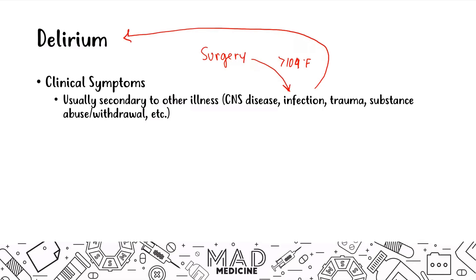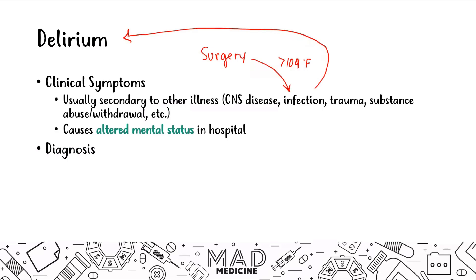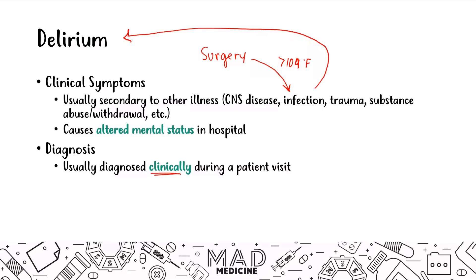All those characterizations should clue you into a patient being delirious and not delusional or psychotic. You'll usually see an altered mental status in the hospital — they're not going to be alert and oriented times four. Diagnosing delirium is done clinically. If they have a history of infection, disease, trauma, or substance abuse or withdrawal, you can assume they're delirious rather than having a psychotic or mental break.